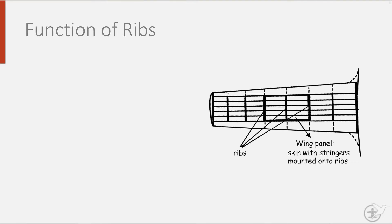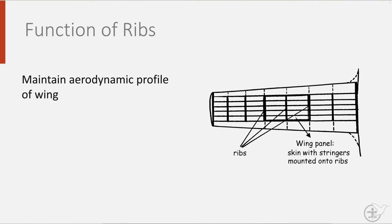Today we will look at an important structural element in wings: the rib. Ribs have an important function in wing design. They ensure that the wing maintains the aerodynamic shape or profile, so the lift is generated as designed by the aerodynamicist.